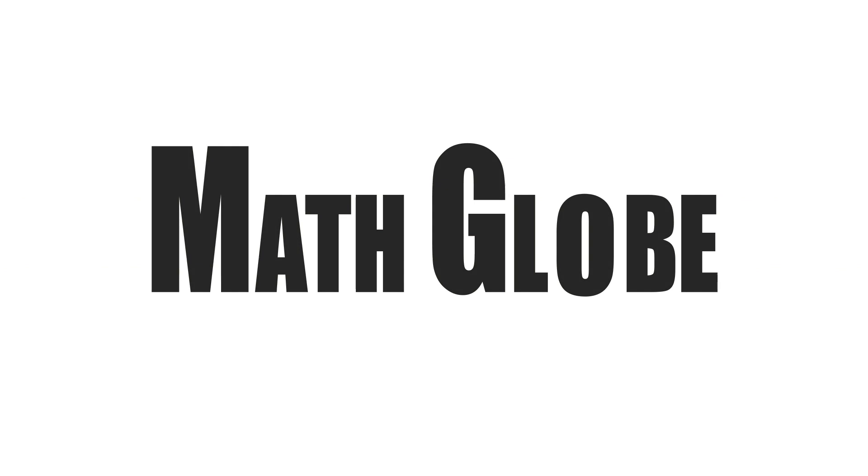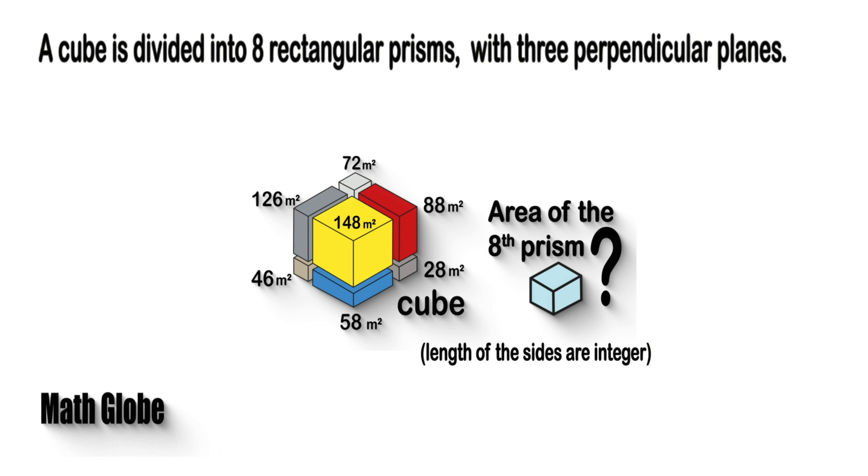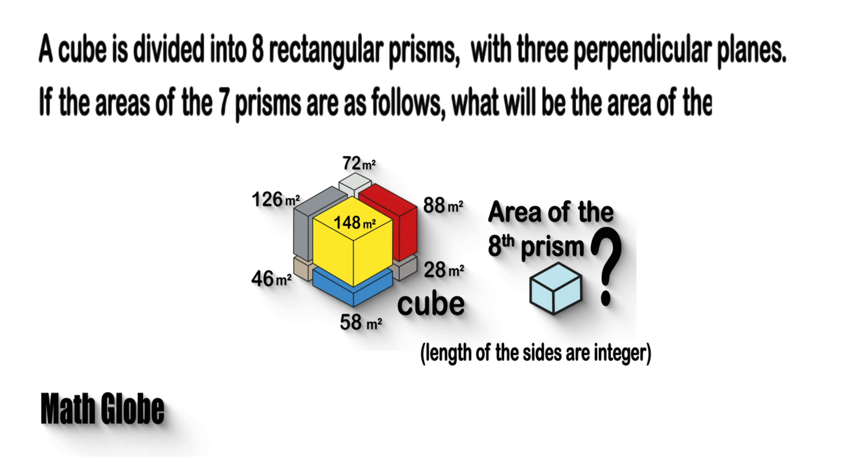Hi, this is Math Globe. A cube is divided into 8 rectangular prisms with 3 perpendicular planes. If the areas of the 7 prisms are as follows, what will be the area of the 8th prism?